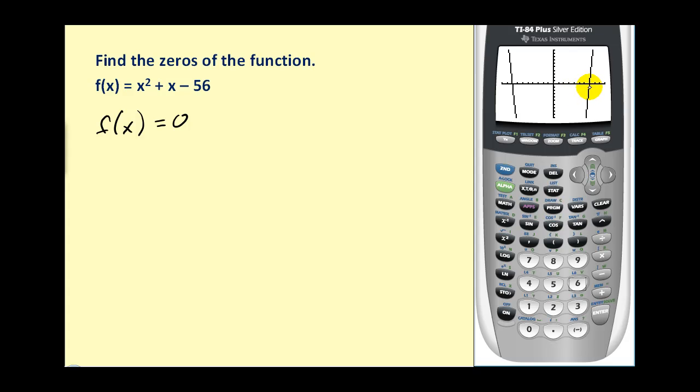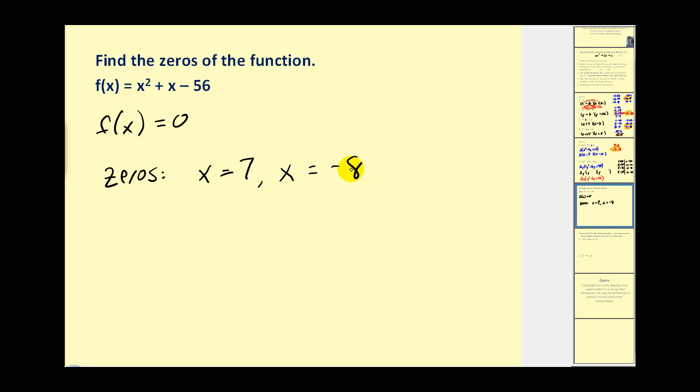And we can see graphically, I won't take the time to calculate it using the calculate feature. Here we have an x-intercept of 7, another one at negative 8. So those are the zeros of the function. And just to make the connection, if we wanted to write the function in factored form, if positive 7 made the function equal to zero, x minus 7 would be one of the factors. And if negative 8 is a zero, x plus 8 would need to be a factor, since we're multiplying these together and the product equals zero.